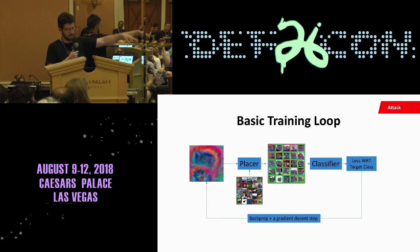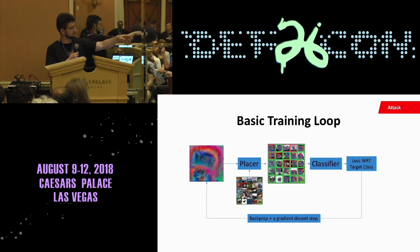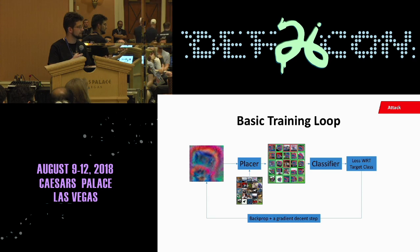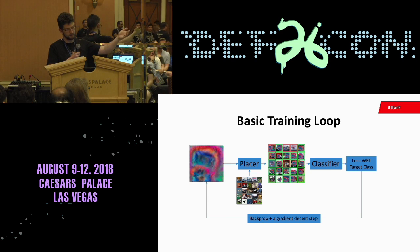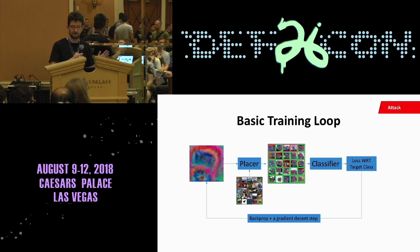The sticker goes through the placer with some images and gets placed on about 25 images that have had a sticker attached to them. Then this goes into a classifier — whatever classifier we have. We take the loss with respect to our target class; in this case I was going for the tenth class of CIFAR. Then we do backprop gradient descent against the original sticker. Because this entire path from the original sticker to the loss is a smooth transformation, we can do gradient descent with respect to the sticker itself.